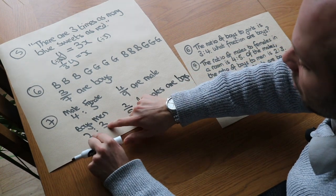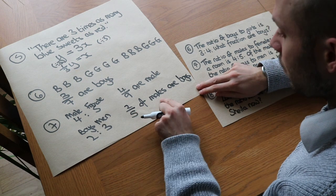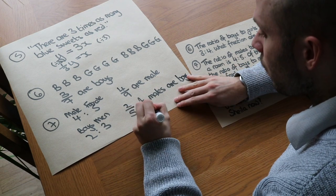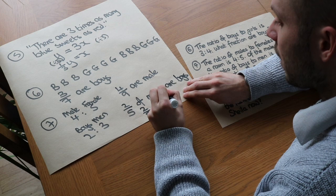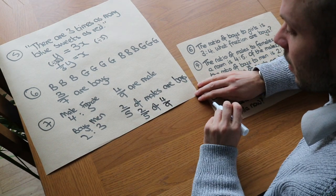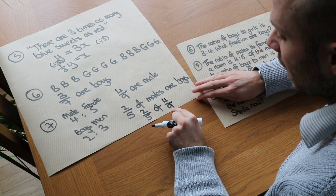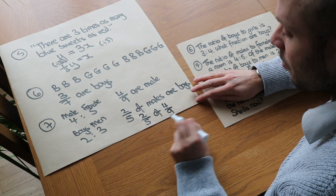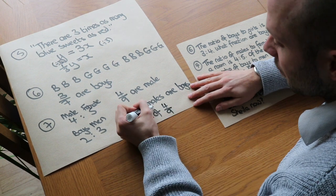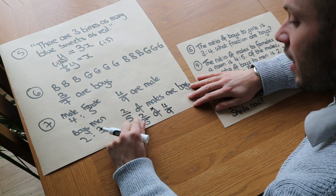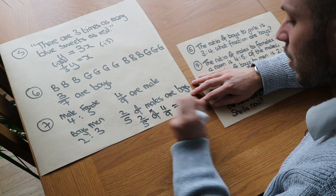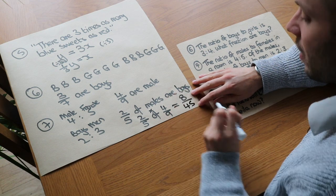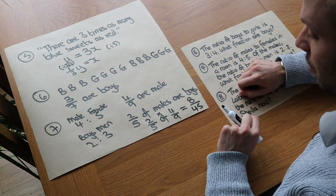So 2-fifths of the males are boys and 4-ninths of people are male. That means 2-fifths of the 4-ninths of the people are boys. Remember, we can turn 'of' into times to find a fraction of an amount. So 2-fifths times 4-ninths: multiply the numerators — 2 times 4 is 8, and multiply the denominators — 5 times 9 is 45. So 8-forty-fifths of the people are boys.